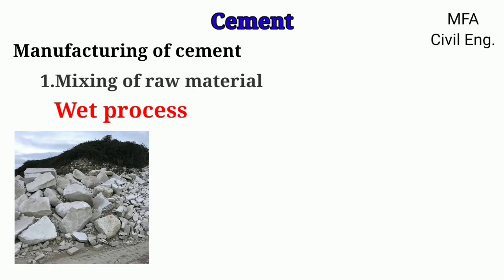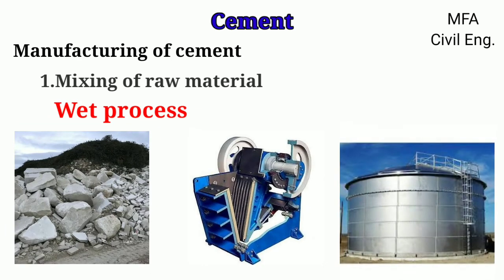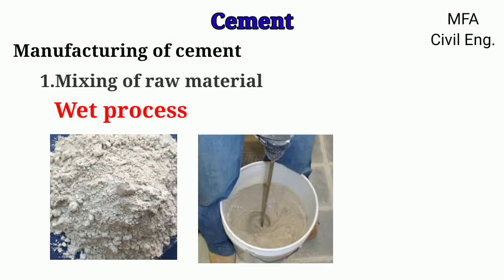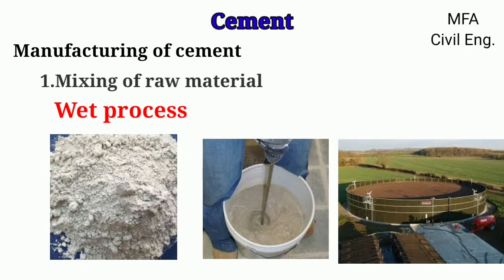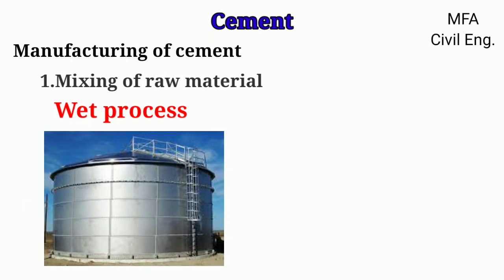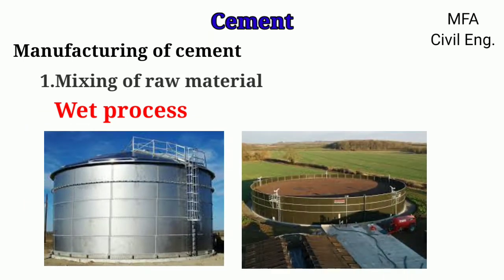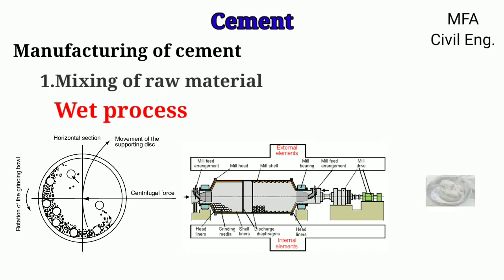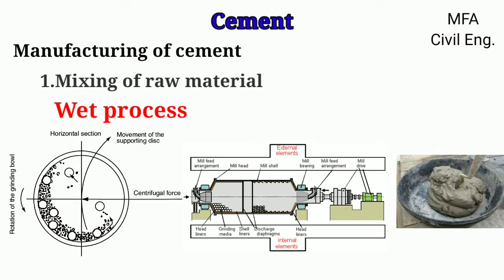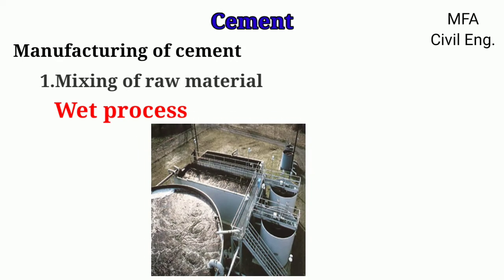In the wet process, limestone is crushed by a jaw crusher and then stored in a storage tank. The clay is thoroughly mixed with water in a wash mill and stored in a storage basin. The crushed limestone and wet clay are conveyed in a channel in appropriate proportion, then carried to a grinding mill to form a slurry using a ball mill or tube mill. The slurry is carried to the correcting basin where the chemical composition is adjusted as necessary, and then stored in a storage tank for the burning process.